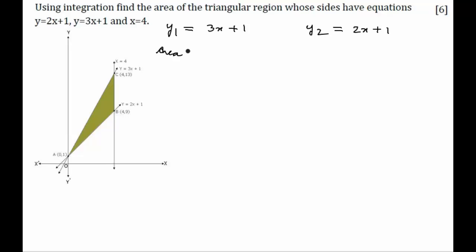The area of the triangle that has formed is going to be equal to the integration of y1 minus y2 with respect to x, where x should vary from 0 to 4.